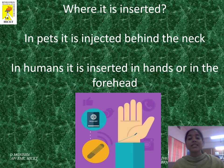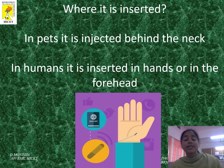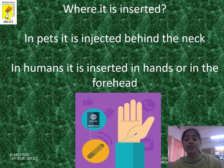Where is it inserted? In pets, it is injected behind the neck. In humans, it is inserted in the hands or in the forehead.